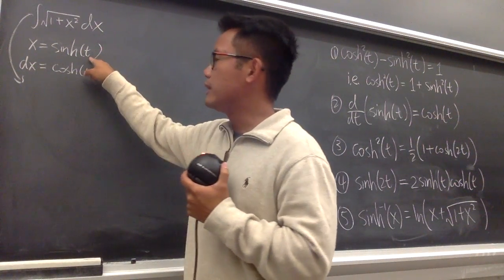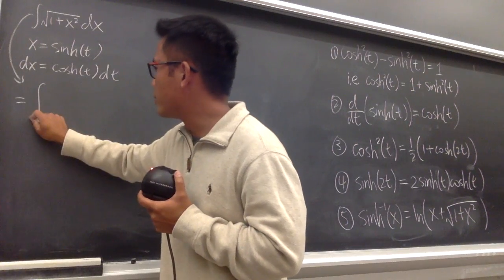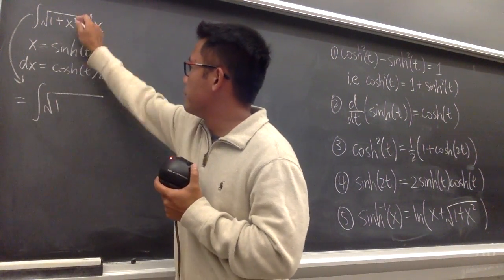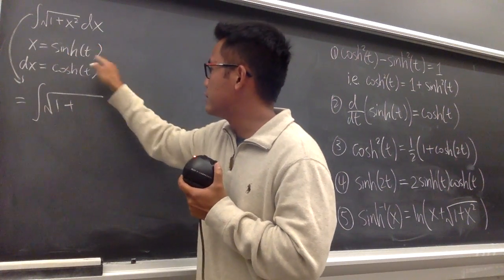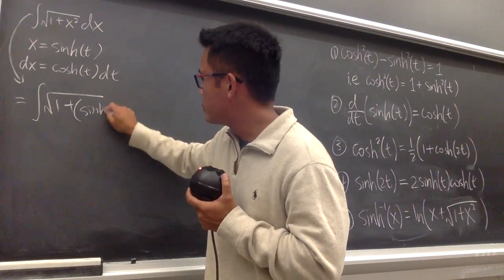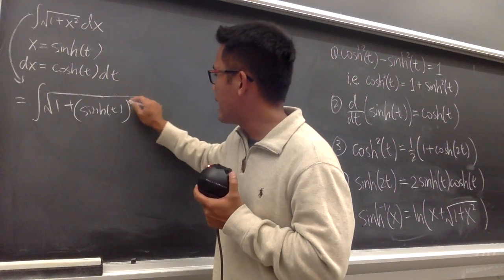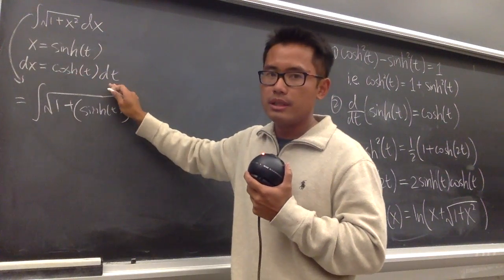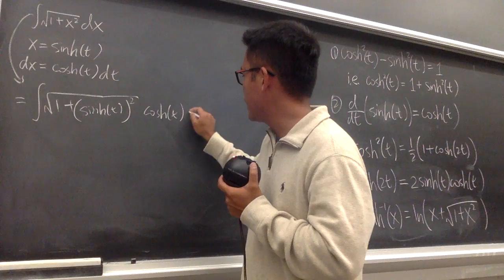Now we can put this integral into the t world — you can choose any other letter if you like. The integral becomes the square root of 1 plus sinh²(t), and for dx we substitute cosh(t)dt.